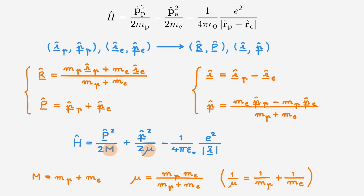So what have we accomplished with this change of coordinates? In the original Hamiltonian, the interaction term depends on the position operators of both the proton and the electron — such an interaction term makes this a two-particle problem. If we now look at the transformed Hamiltonian, we see that the interaction term only depends on the relative position operator, but does not depend on operators associated with the centre of mass. This means that we can now describe the hydrogen atom as two separate one-particle problems, which is a much simpler setup than the original two-particle problem.